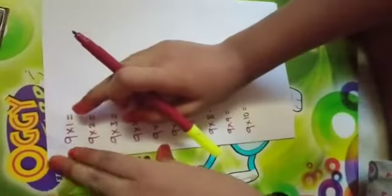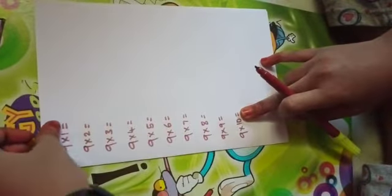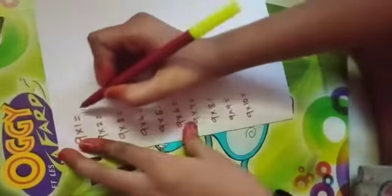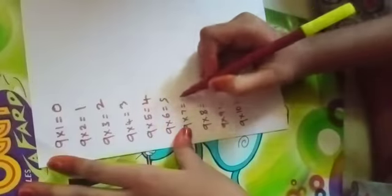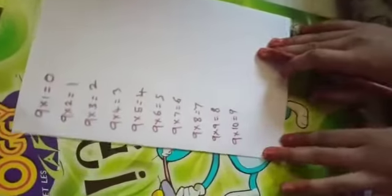So, here write numbers from 0 to 9, going top to down. Now, here, let's write 0, 1, 2, 3, 4, 5, 6, 7, 8, 9. We wrote it now.